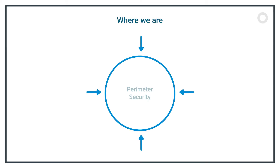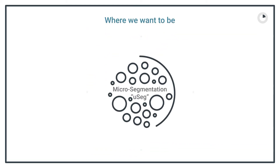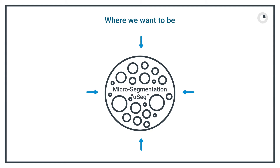Micro-segmentation is the solution to the big old gaps in perimeter security. With perimeter security, we try and stop everything from getting in, and if something does, there's little to no checks and balances for it within the perimeter. So we want to build tighter security zones, or micro-segments — little tiny security control zones that will prevent a single breach from propagating freely throughout your entire application environment.